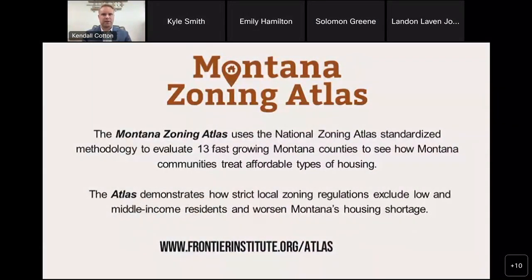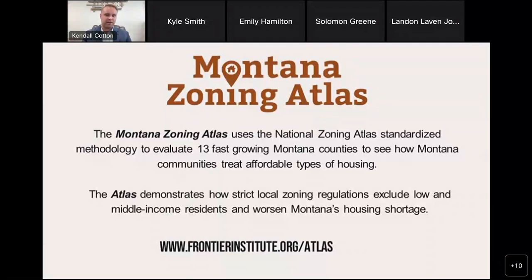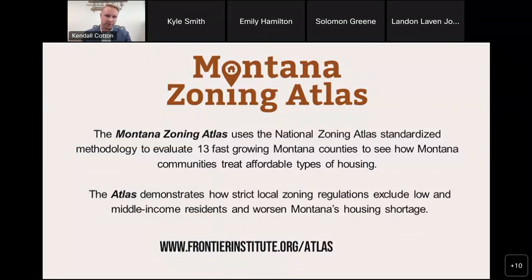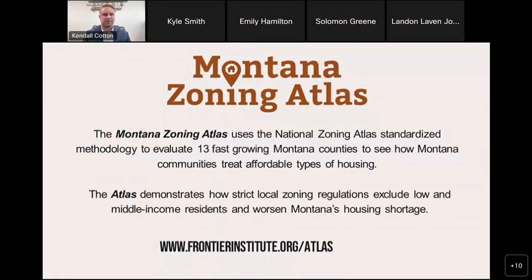The Montana Zoning Atlas uses a standardized methodology developed by researchers at Cornell with the National Zoning Atlas project. We used that to evaluate 13 of the fastest-growing counties in Montana that were seeing some of the biggest pressure of population growth. We visualized in an interactive map format where you can build things like duplexes — this missing middle-style housing design that tends to be more affordable — and where you can't build that sort of housing. One of the things we found is that by and large, the major cities in Montana overwhelmingly reserve the majority of their cities for expensive single-family home types on large lots, rather than slightly denser, more affordable types of homes like missing middle multifamily developments like duplexes and triplexes. Overall, across all the counties we measured, we found that 50% of zoned land either outright prohibits or penalizes by requiring additional regulatory hoops for this affordable multifamily starter-home development like duplexes.